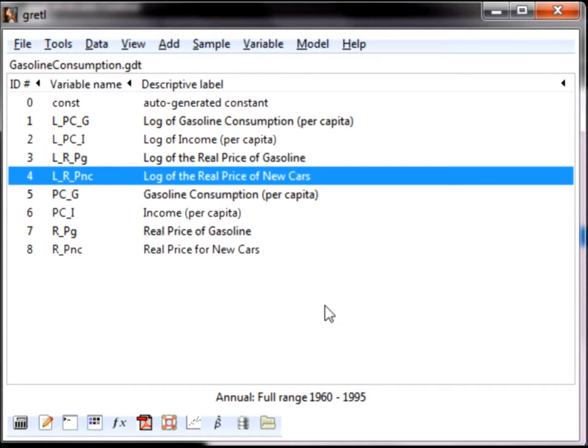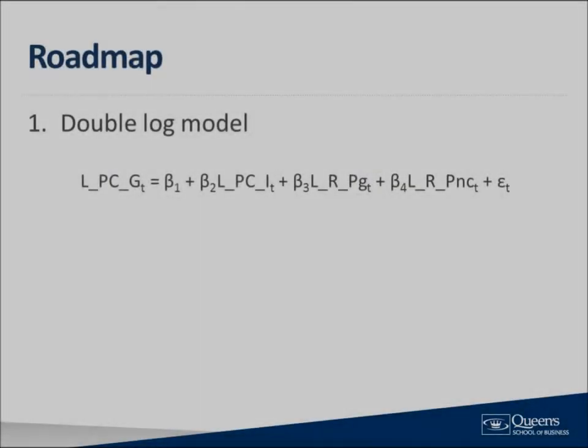Before performing any specification tests, we must estimate a regression equation. The regression equation that we want to run is per capita gasoline consumption as a function of income, the real price of gasoline, and the real price of new cars. We are going to use the double log functional form because the coefficient estimates on the slope terms can be interpreted as estimates of elasticities. One thing to keep in mind is that the double log functional form assumes that elasticities are fixed.